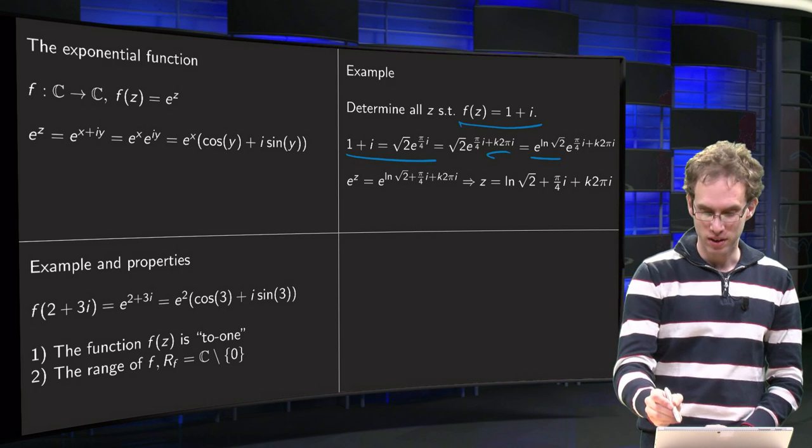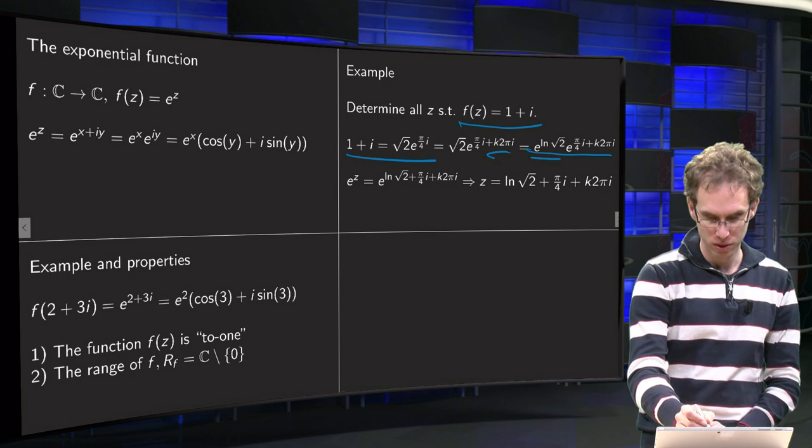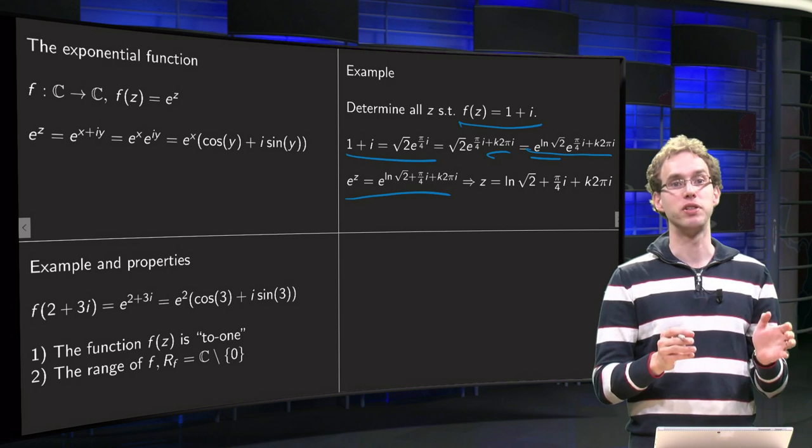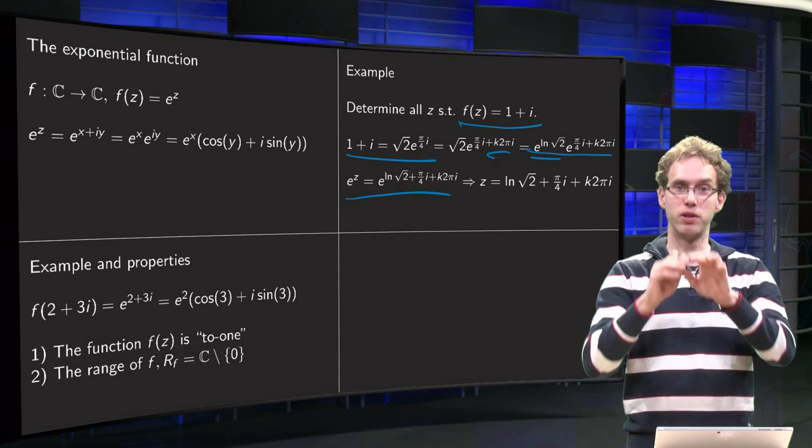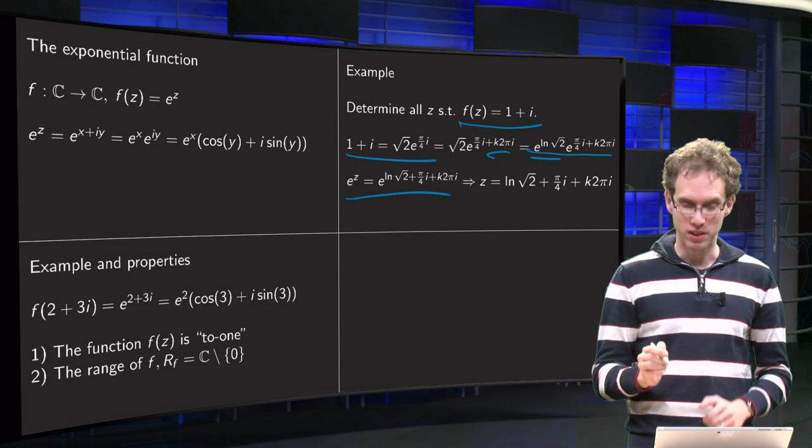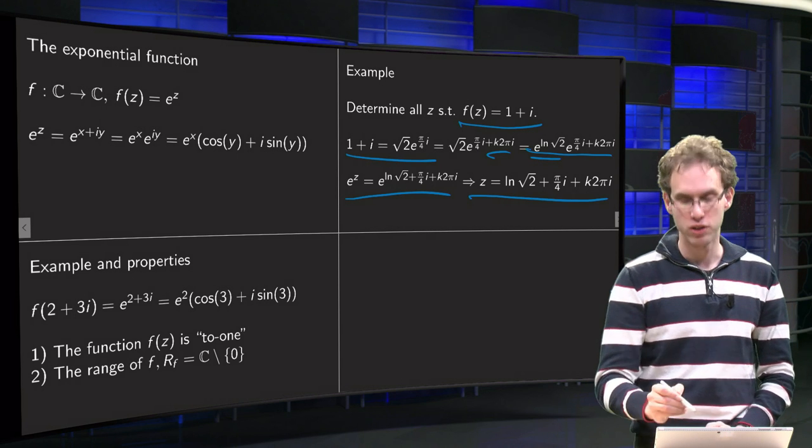So we can rewrite our right-hand side as one exponential. We have e to the power z equals e to the power some expression, and that means z has to be equal to that expression.